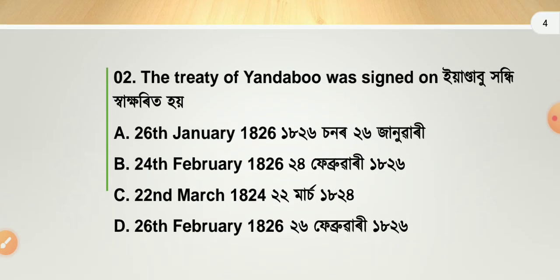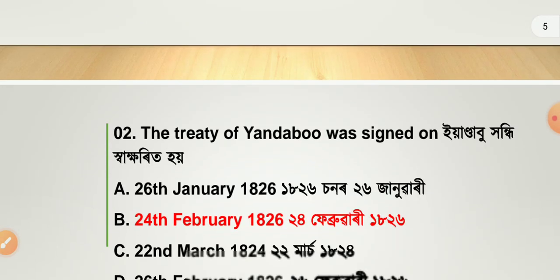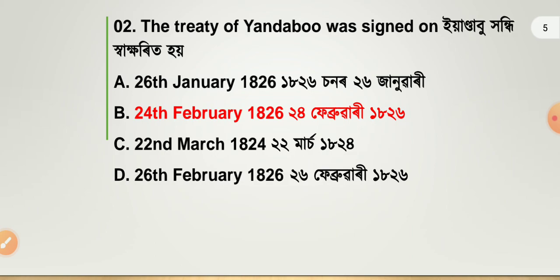Next question: the Treaty of Yandabu was signed on — your answer is option number B, 24th February 1826.